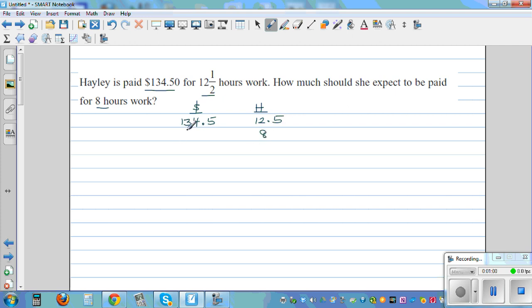Now use your common sense. This number that you're going to get should be less than $134. From 12.5 you're going to 8, so this is decreasing. Therefore, the dollars that she is going to get is also going to be decreasing.